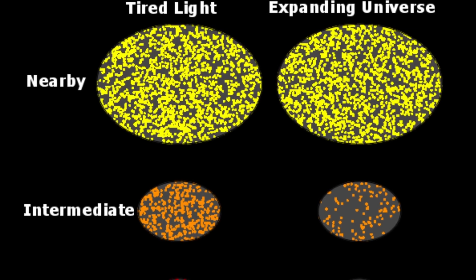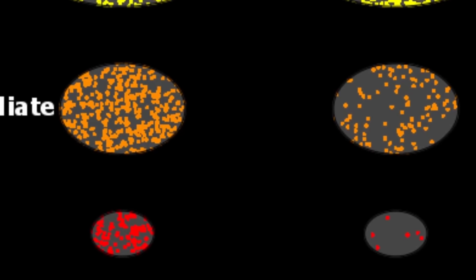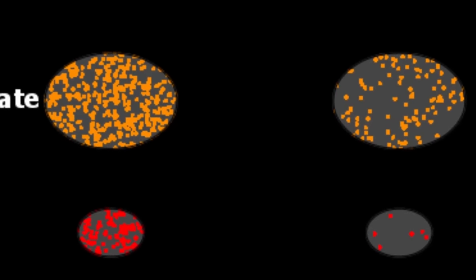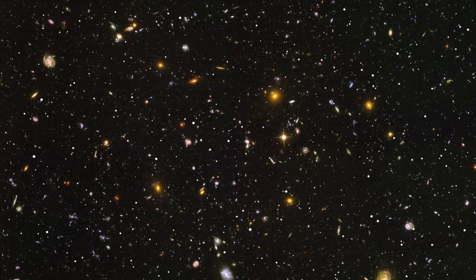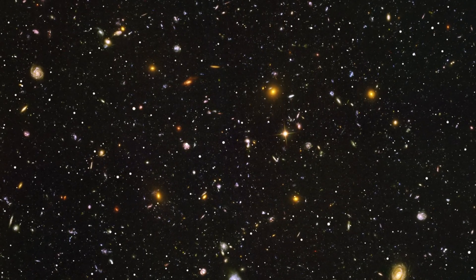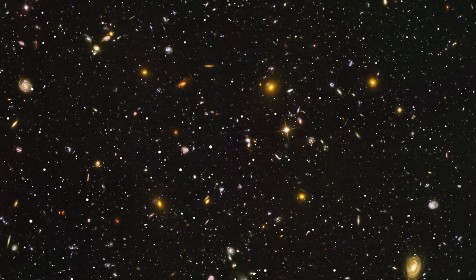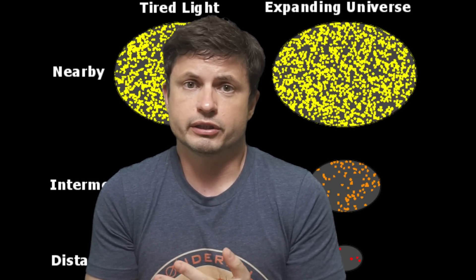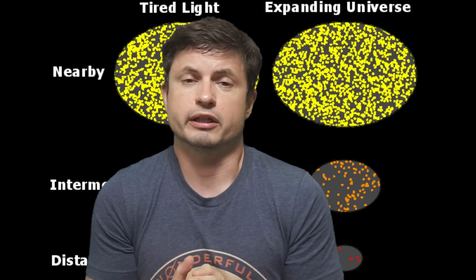For example, it could not explain why we don't see as many galaxies far away from us as expected from a universe that's not expanding. In reality at the distant universe we actually only see some galaxies, not as many as predicted. There are quite a lot of things the tired light hypothesis just cannot explain at all.